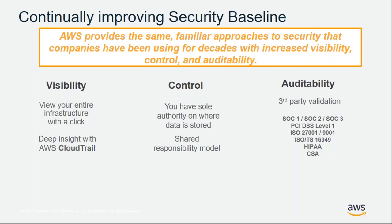We also have a shared responsibility model. AWS is responsible for the security of the cloud — the underlying infrastructure, data centers, servers, storage, and everything up to the hypervisor. You as a customer are responsible for security in the cloud — your data, encrypting it, and managing access to it. With free end-to-end encryption, customers can easily maintain data security across infrastructure.